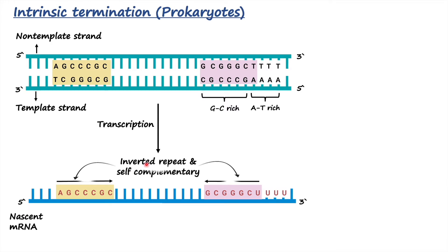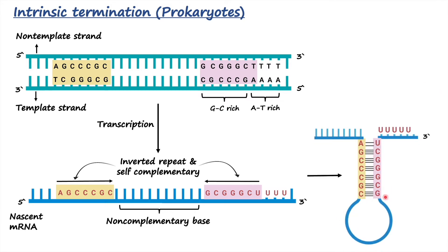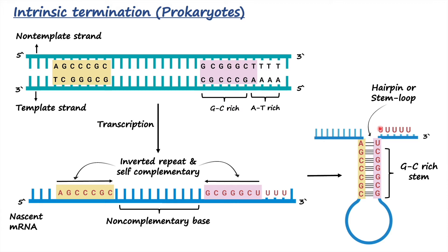These GC-rich regions are called inverted repeats, and importantly they are self-complementary because they can form base pairing despite being on the same strand. The region in between the inverted repeats contains non-complementary bases that cannot form base pairing. Due to this self-complementary feature, the RNA strand can fold on itself and create a structure with base pairing between G and C of the inverted repeats — that is called the GC-rich stem. The bottom circular structure is called the hairpin loop, or stem-loop structure.